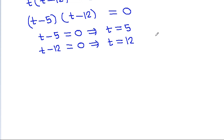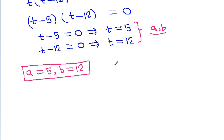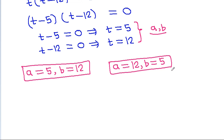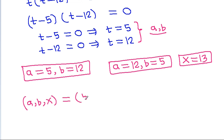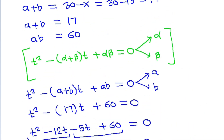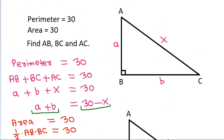The roots of this equation are A and B. So either A equals 5 and B equals 12, or A equals 12 and B equals 5. Since X equals 13, the sides AB, BC, AC are either 5, 12, 13 or 12, 5, 13.